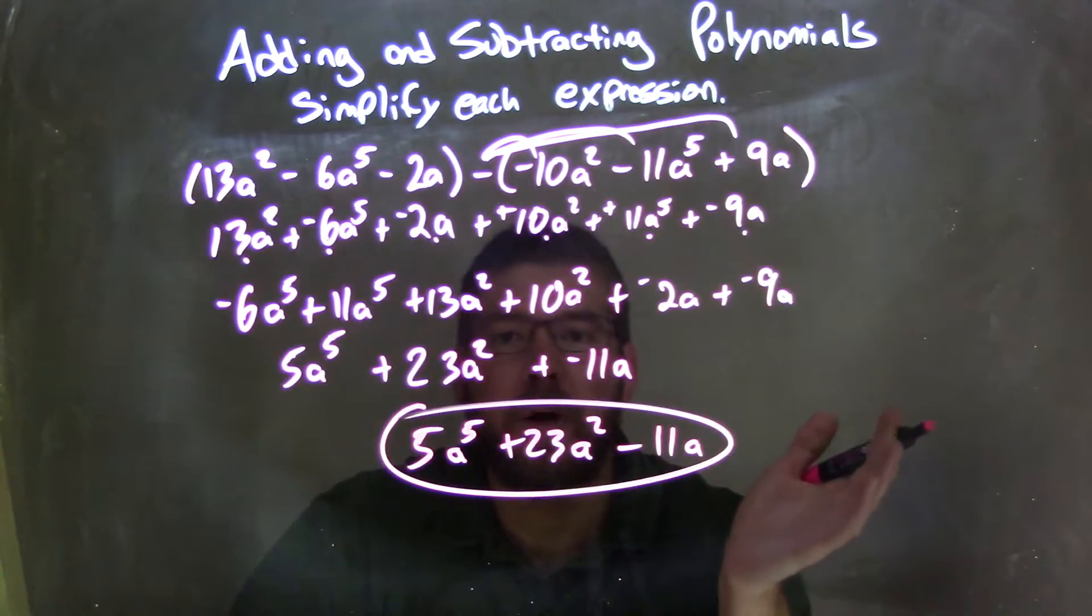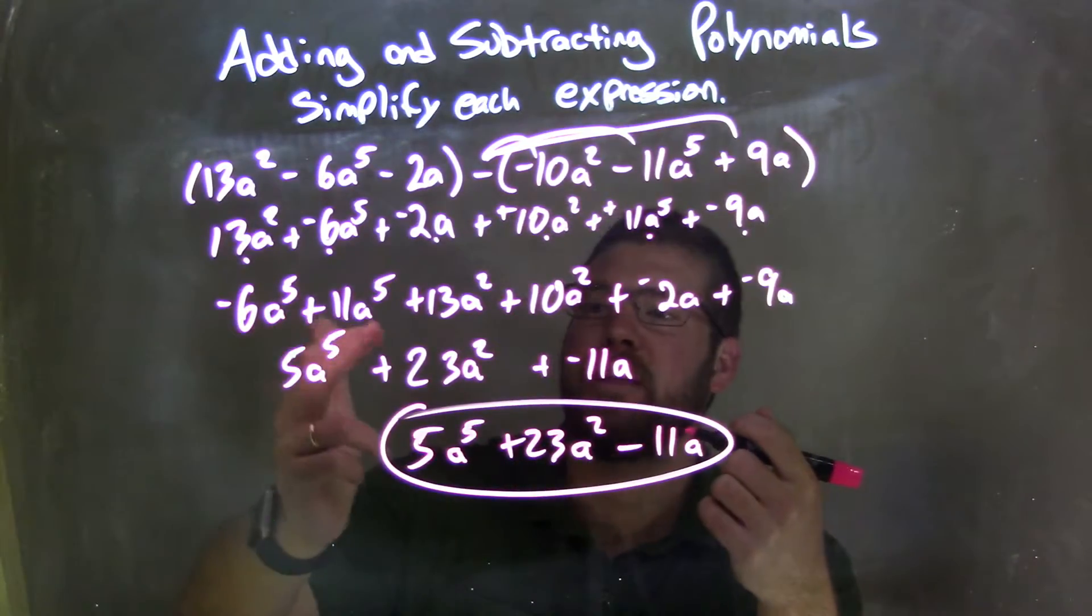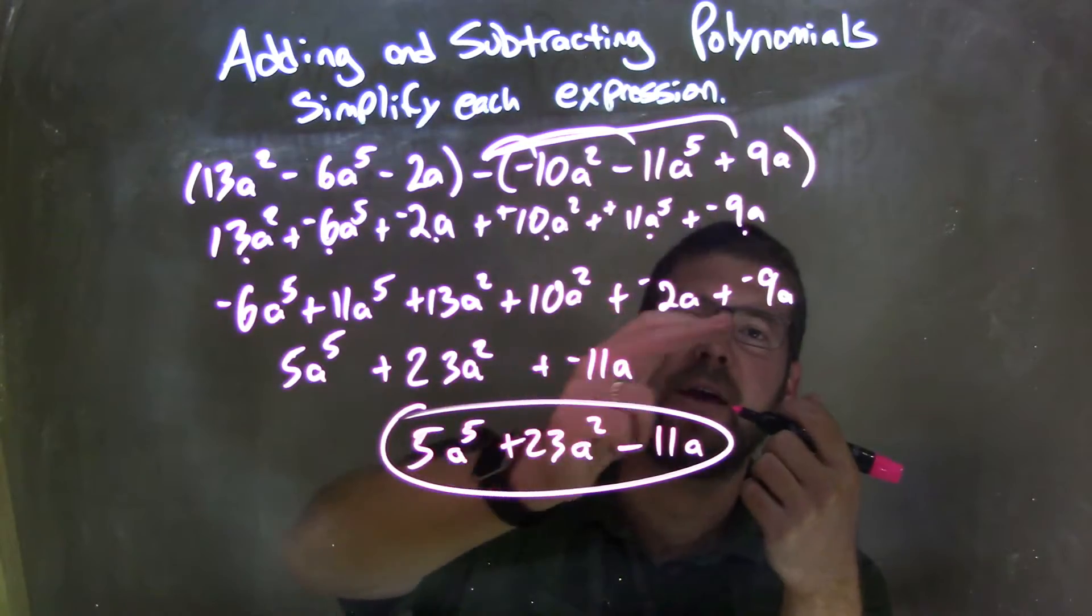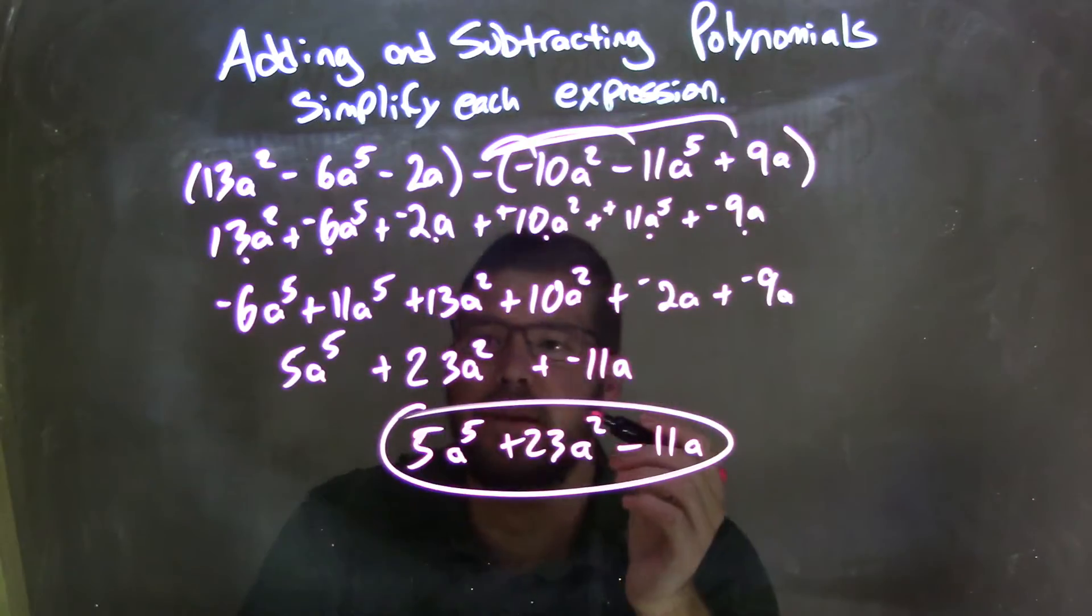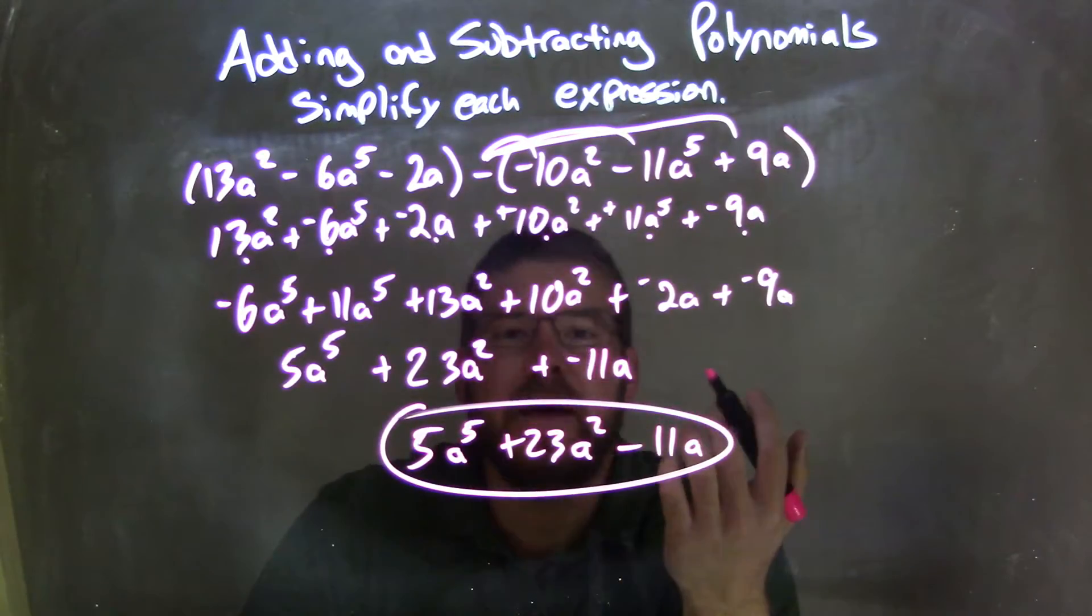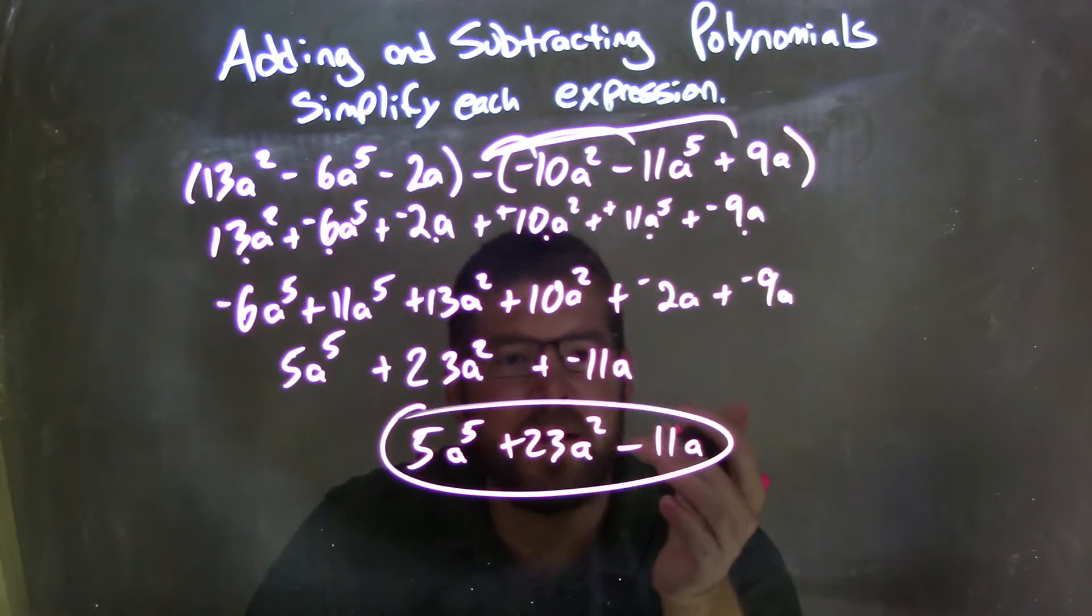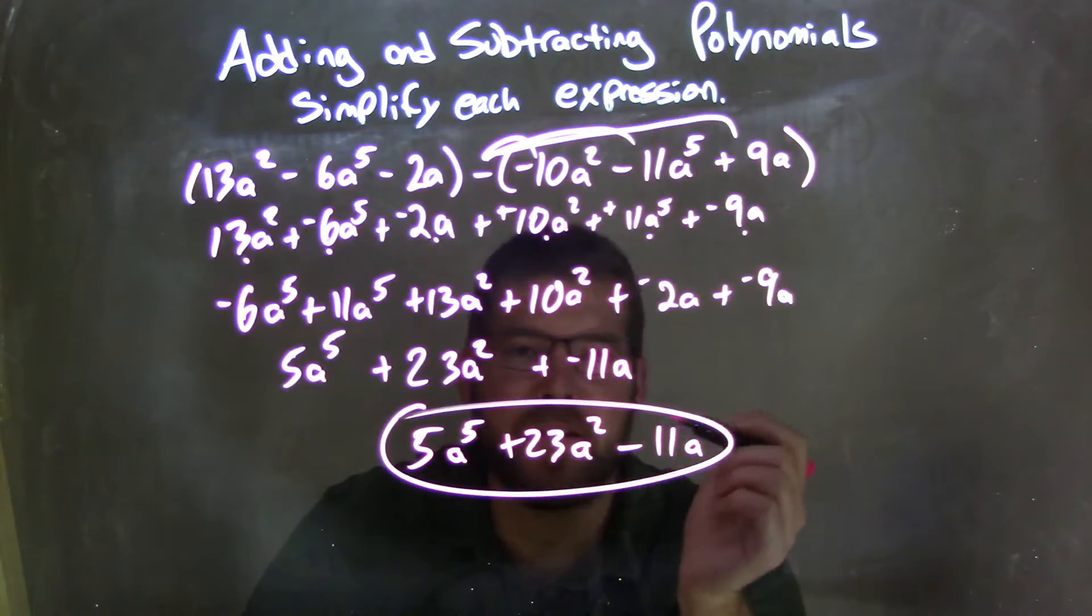Then I rearranged, put all my like terms together and the highest degree first. So we have negative 6a to the 5th and 11a to the 5th first. Then 13a squared, 10a squared, negative 2a, negative 9a. I used the dot method and double-checked everything. I combined my like terms, and then I made it a subtraction sign for our final answer. And so now we have our final answer, which is 5a to the 5th plus 23a squared minus 11a.